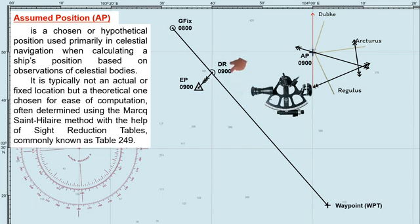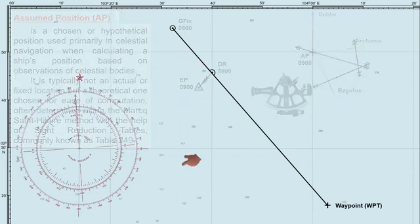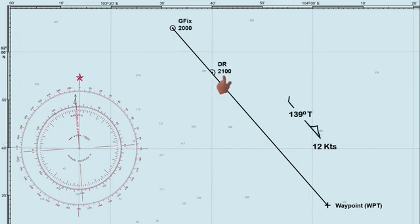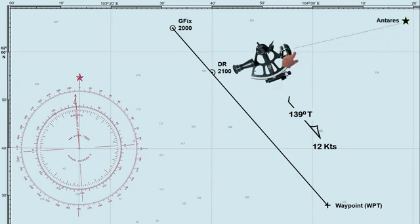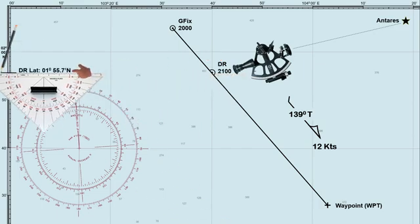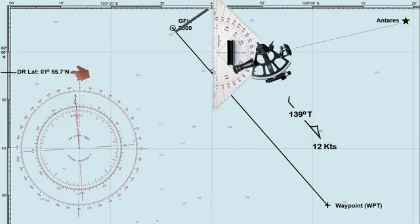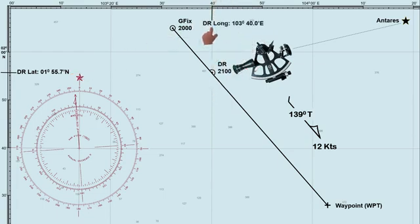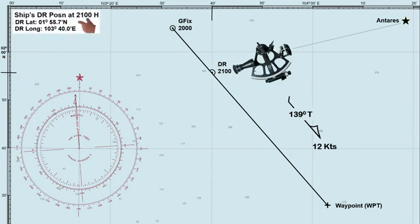If you're not familiar with dead reckoning and estimated position, please check the link in the description for a detailed explanation. Let's assume that at 2100 hours, we have observed the sextant altitude of the star Antares, and the ship's DR position is here. The DR latitude is 01 degree, 55.7 minutes north, and the DR longitude is 103 degrees, 40.0 minutes east. The next steps involve celestial navigation calculations, but I won't go into detail on that here.